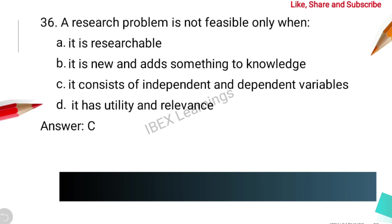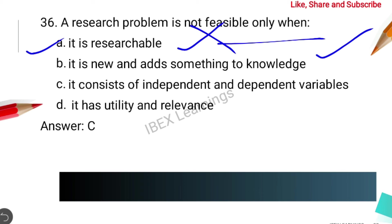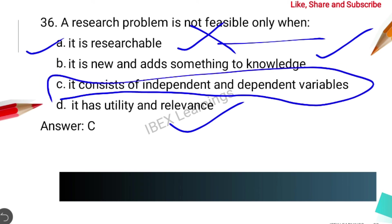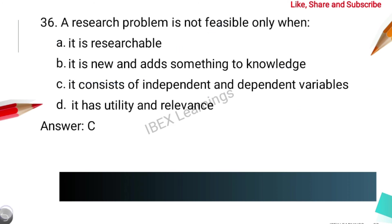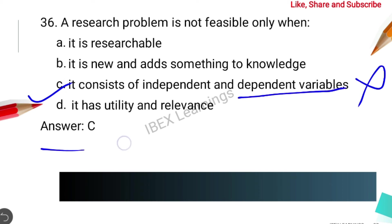The next question is about when a research problem is not feasible. A good research problem should be researchable, add something to new knowledge, and have utility and relevance. Sometimes you can solve by using the odd-one-out method if you don't know the answer. The odd option here involves independent and dependent variables. The correct answer is option C.